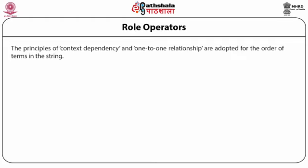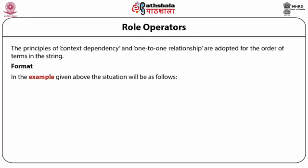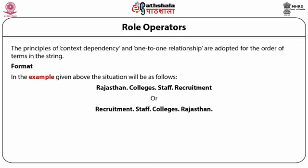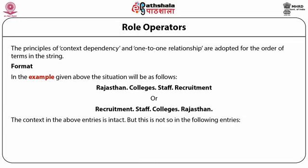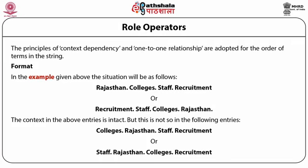Role operators. The principles of context-dependency and one-to-one relationship are adopted for the order of terms in the string format. In the example given, the situation will be as follows: Rajasthan.College.Staff.Recruitment or Recruitment.Staff.Colleges.Rajasthan. The context in these entries is intact, but this is not so in entries like: Colleges.Rajasthan.Staff.Recruitment or Staff.Rajasthan.College.Recruitment.